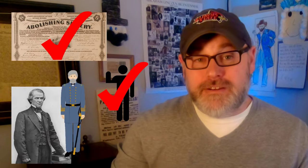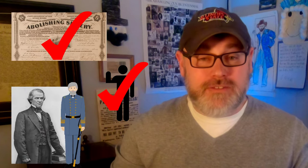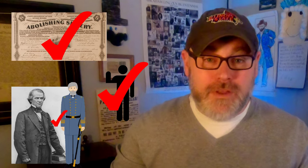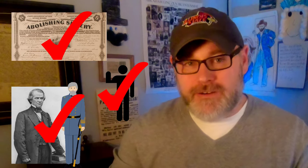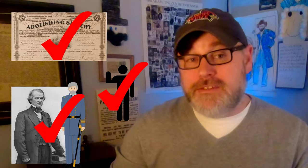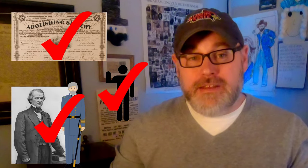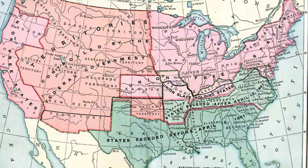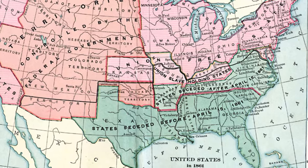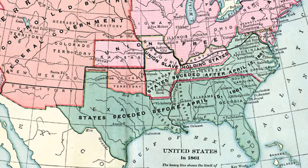Johnson's plan allowed states to be readmitted once they ratified the 13th Amendment. Southerners could then take a very simple loyalty oath, become citizens again, and be forgiven of any actions taken against the Union during the war. Confederate leaders would have to personally request a pardon from Johnson himself, which he granted quite easily, and by the end of 1865 all former Confederate states except Texas were ready to be readmitted.